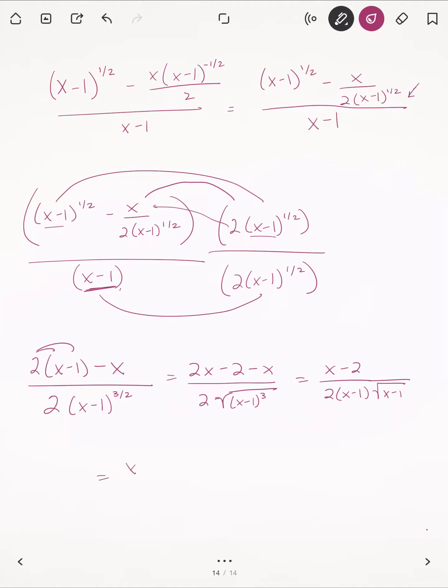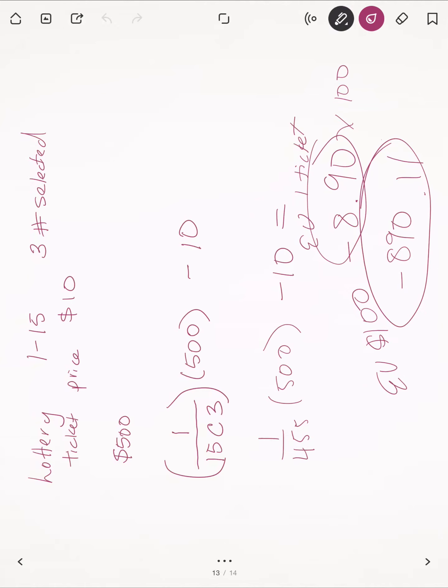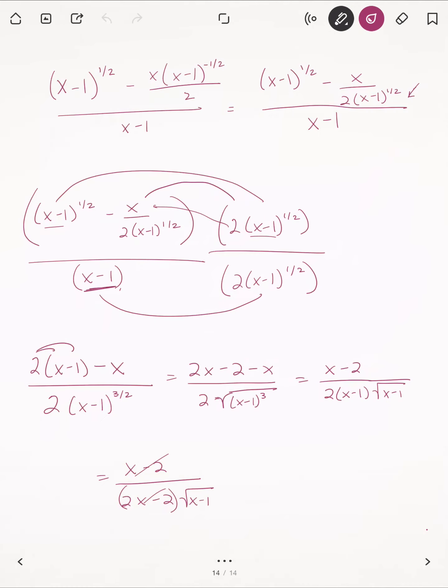We'll go ahead and extend that out, so I get x minus 2 over 2x minus 2 times the whole thing, times the square root of x minus 1. Now, I can't cancel these out or do anything, because they're not exactly the same factors, so we're going to leave that as x minus 2, that'll be one factor, and then we have 2x minus 2 times the square root of x minus 1.